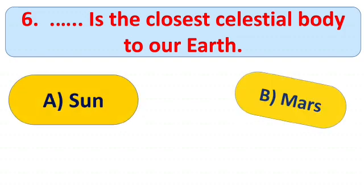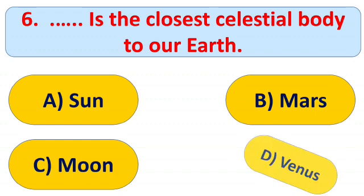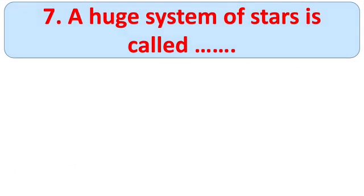Question number six: blank is the closest celestial body to our Earth. Options: A) Sun, B) Mars, C) Moon, and D) Venus. The right answer is C) Moon, and you know the Moon is the only satellite of our Earth.